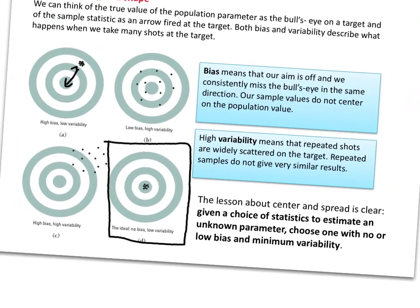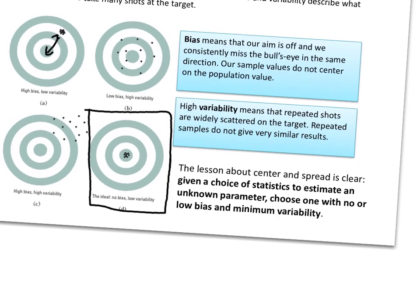When using statistics to investigate a parameter of a population, choose a statistic with low bias and low variability. That is the ideal situation — we don't always get it, but that's what we're looking for: low bias and low variability means we are on target. Please keep these notes as you will fill out the rest of the note sheets as we progress through the videos.